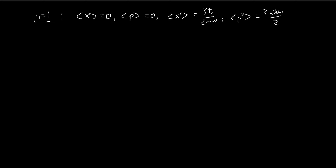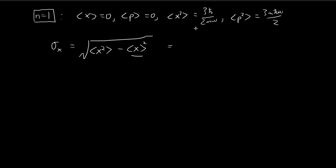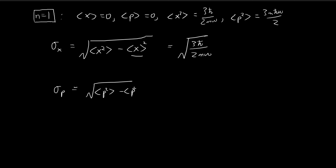Now we need to do the same thing for the first stationary state — we repeat the process. We find the standard deviation of x using the same formula: the expected value of x squared minus the expected value of x, squared. Once again, the ⟨x⟩ term is equal to 0, so we just have the x-squared term. The same applies for momentum — we substitute the results in, and ⟨p⟩ is equal to 0.